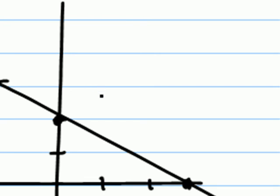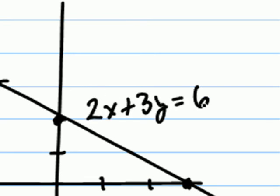And now, we can plot at least two ordered pairs. I'll be plotting the ordered pair zero, two. And then the ordered pair three, zero. And then drawing a line through those two points. And then labeling the line, two x plus three y equals six.